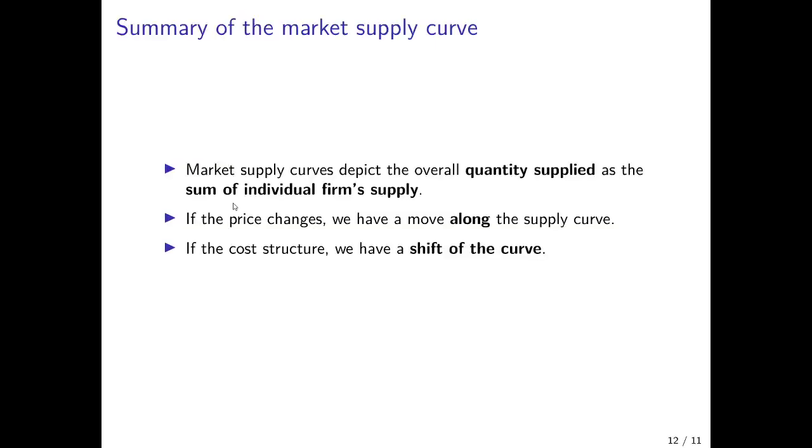So we can summarize what we've learned here, that the market supply curves are depicting the overall quantity that is supplied by all the firms in a certain market. So it's the sum of the quantity supplied by the individual firms. If the price changes, we have a movement along the curve. If the cost structure changes, we have a shift of the curve. And again, realistic supply functions would be nonlinear, rather flat at lower price levels and becoming steeper at higher price levels.